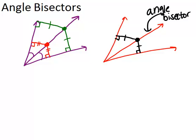if this segment is the same as this segment and both are perpendicular, meaning that this point is equidistant from the two sides of the angle, then these two little angles must be congruent because it must be an angle bisector.